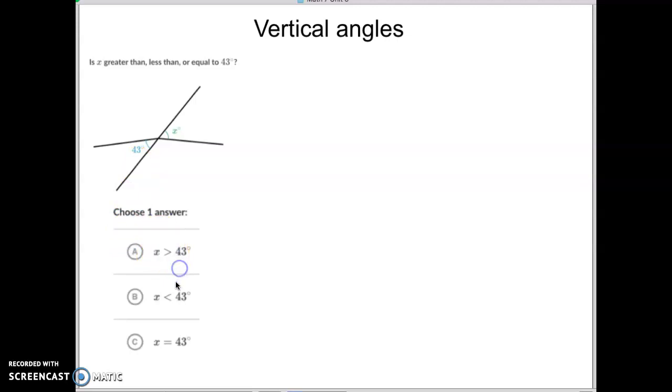This is a greater than symbol. This is a less than symbol. That obviously is an equal symbol. So X is greater than 43 degrees. Okay, let's do another one.